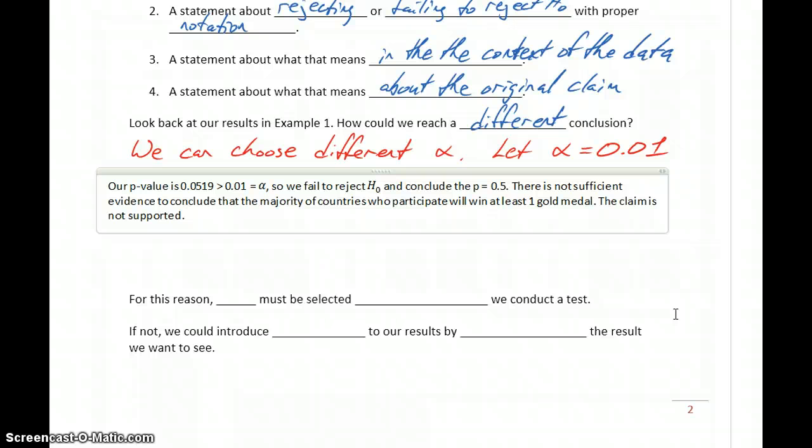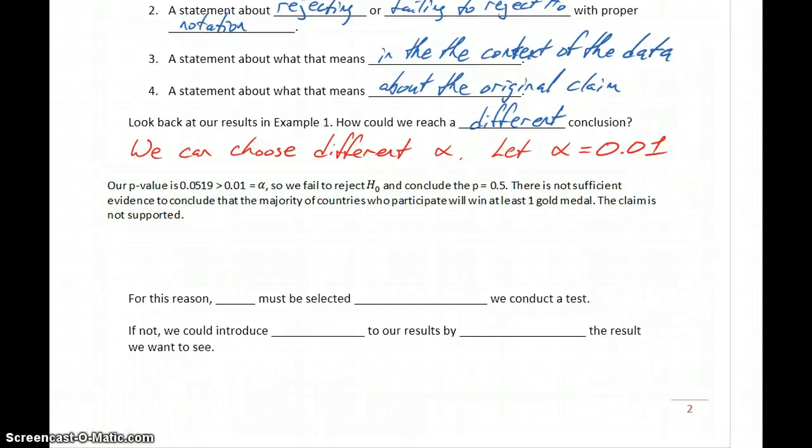So by simply changing our significance level we came to pretty much the opposite conclusion. So for this reason our value for alpha needs to be selected before we conduct a test. If not, we're introducing a form of bias into our results by forcing the results to come out to be what we want to see.